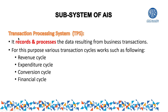The first part of AIS is TPS, which means Transaction Processing System. The responsibility of this system is to record and process data resulting from business transactions. The responsibility of TPS is simply to take the business transaction, record it, and process it. The rest of the information belongs to other parts.